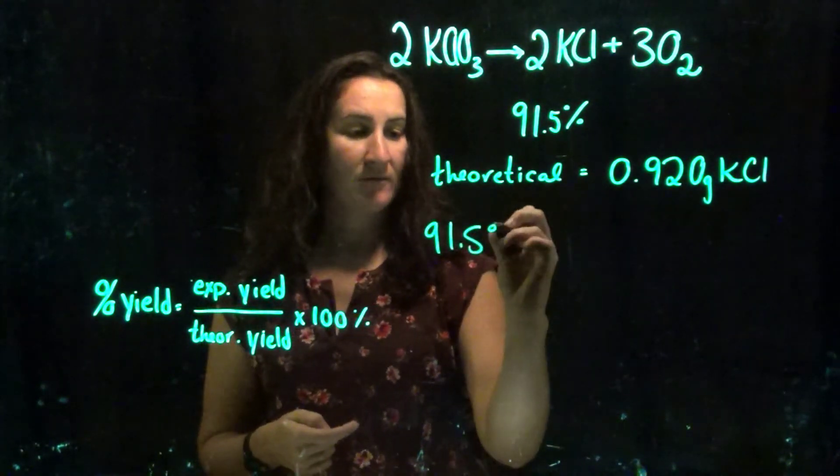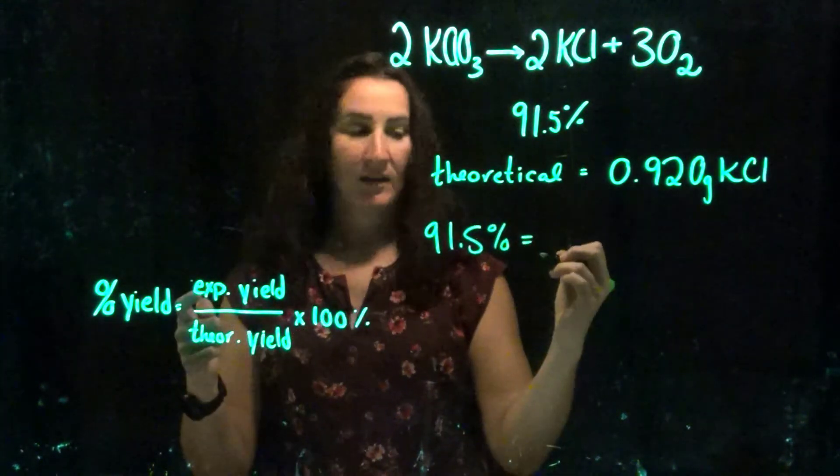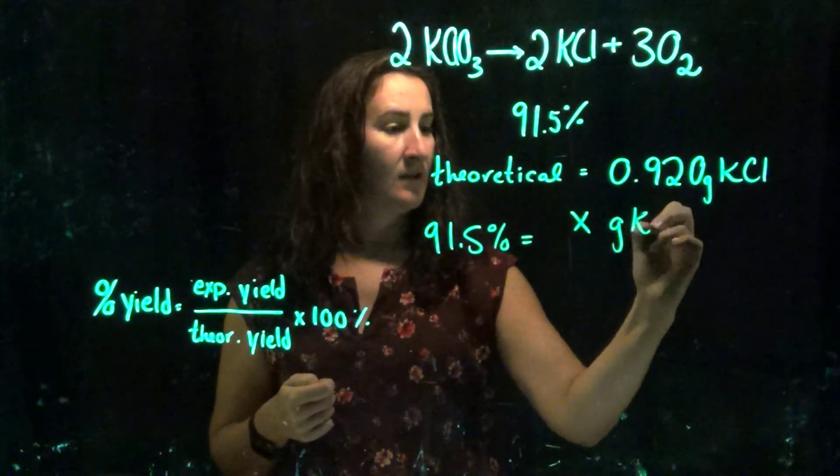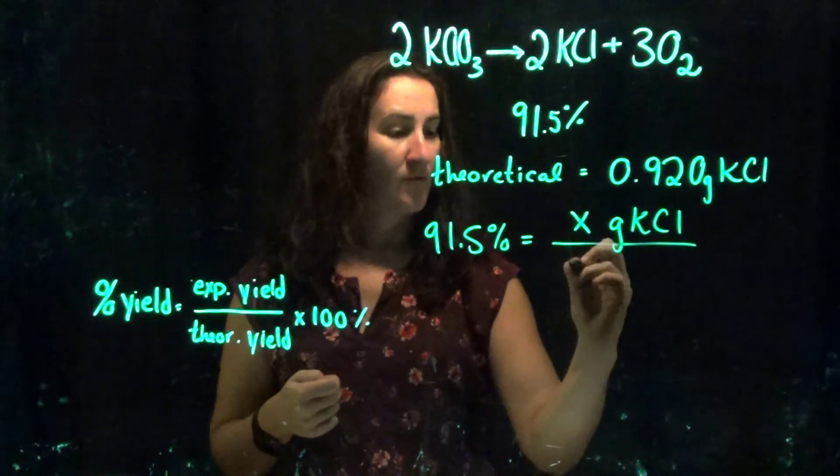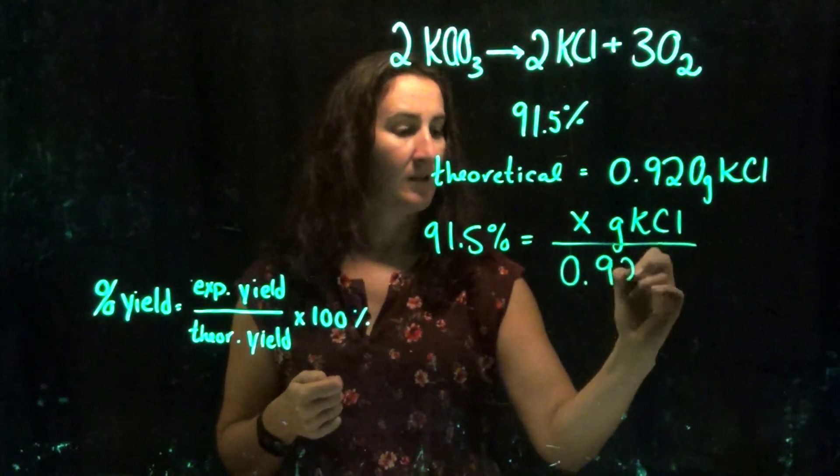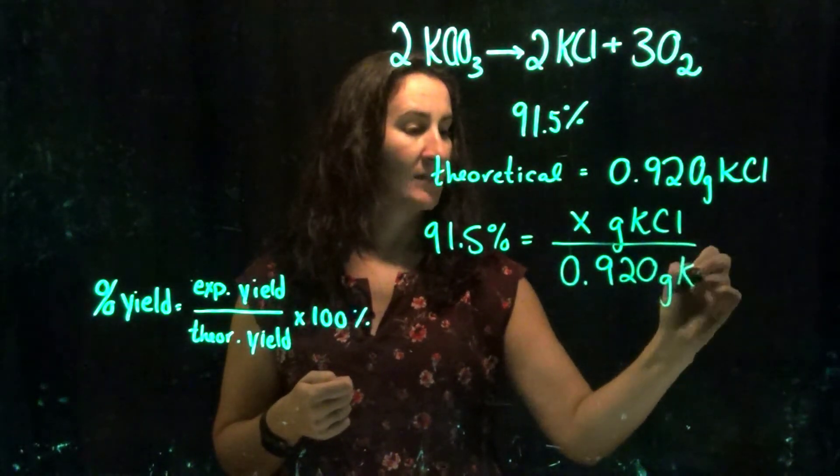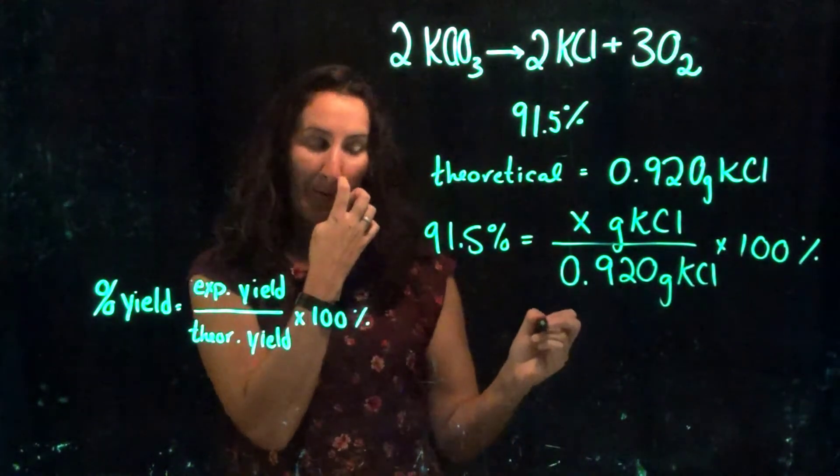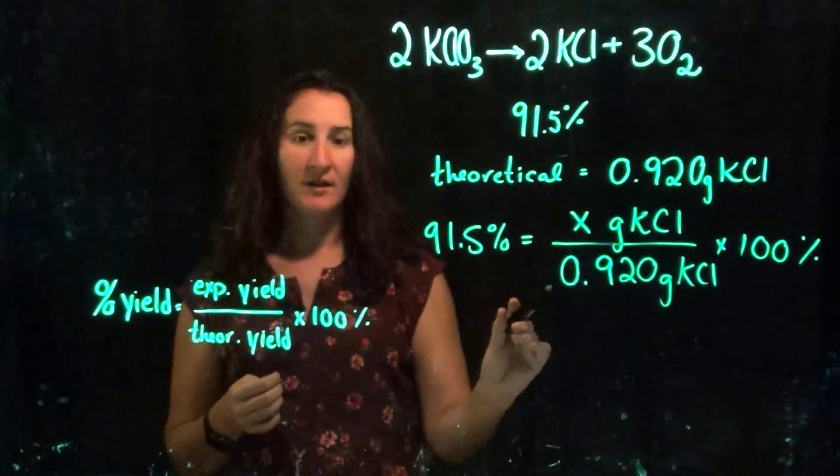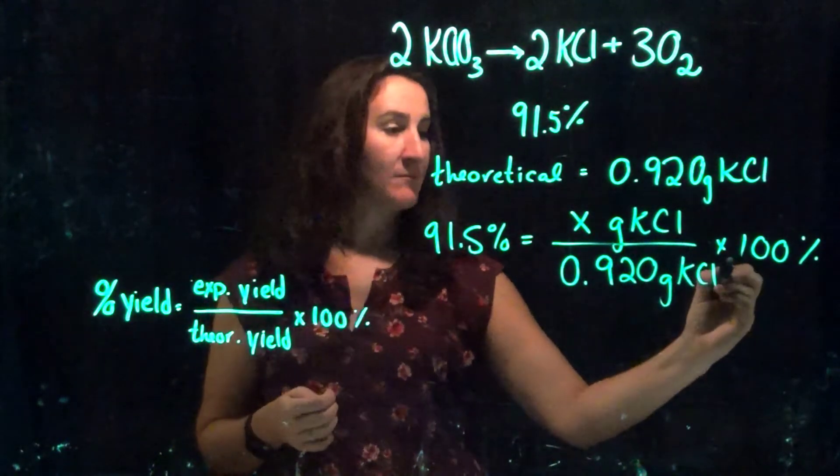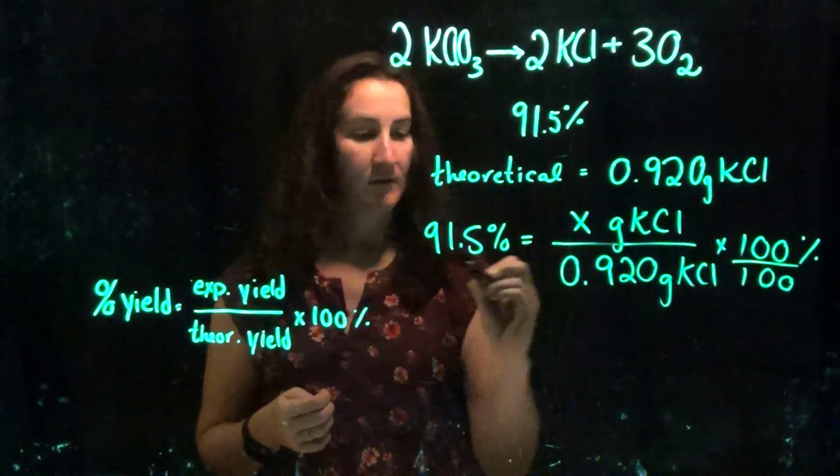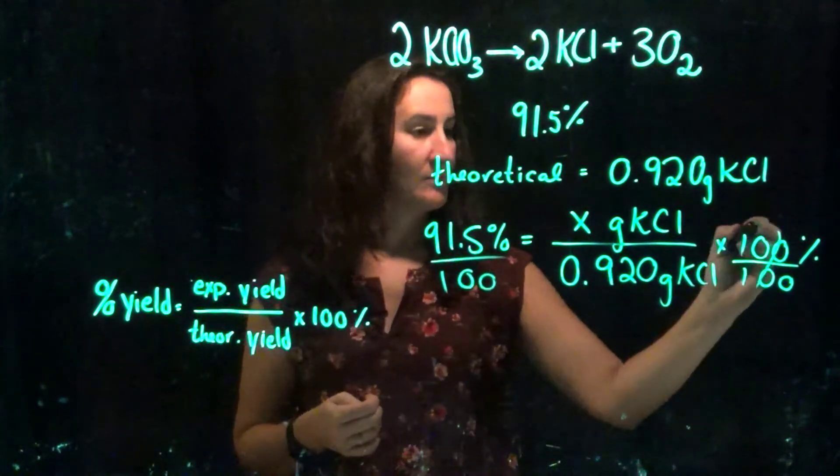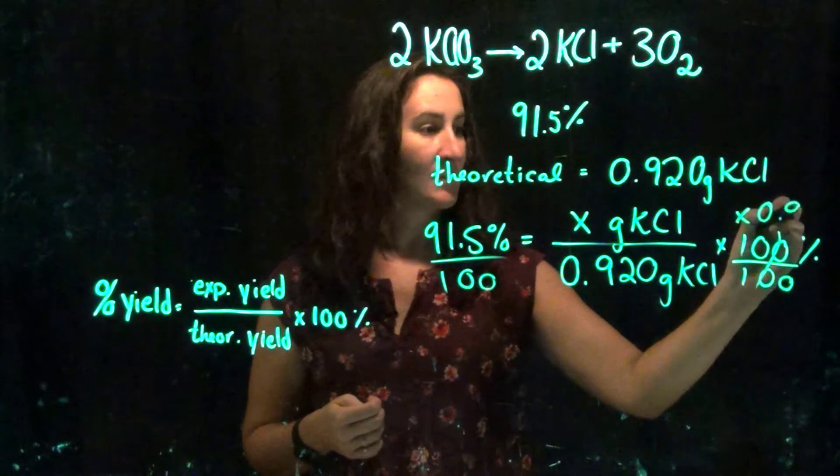So, 91.5% equals experimental yield, which is what I'm solving for, grams of KCl, over my theoretical yield, 0.920 grams of KCl, times 100 with units of percent. So in this case, I need to get x by myself. So to get x by myself, I divide both sides by 100, and then I multiply both sides by 0.920.